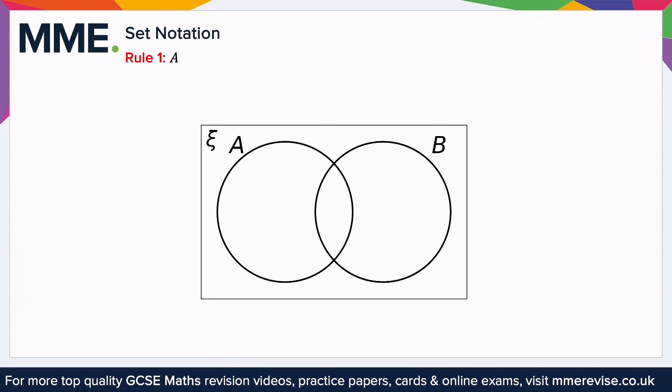So looking at the Venn diagram here, you can see that this circle is the set A. So anything that falls within this circle, including the bit where it overlaps with B, is the set A.